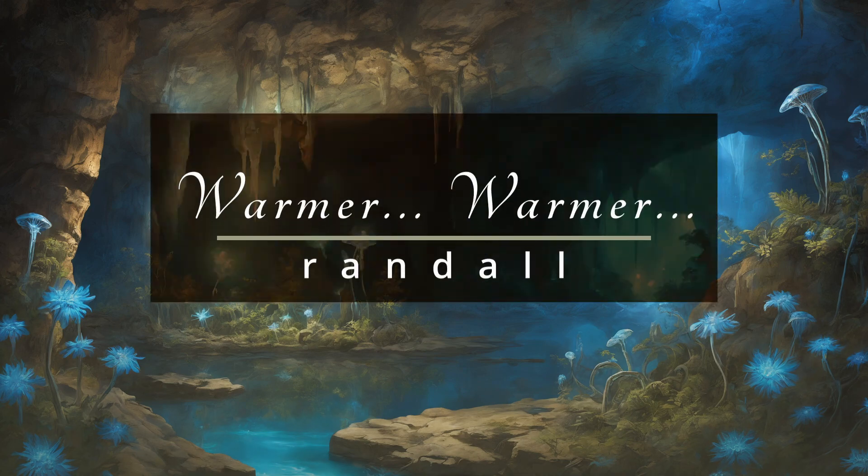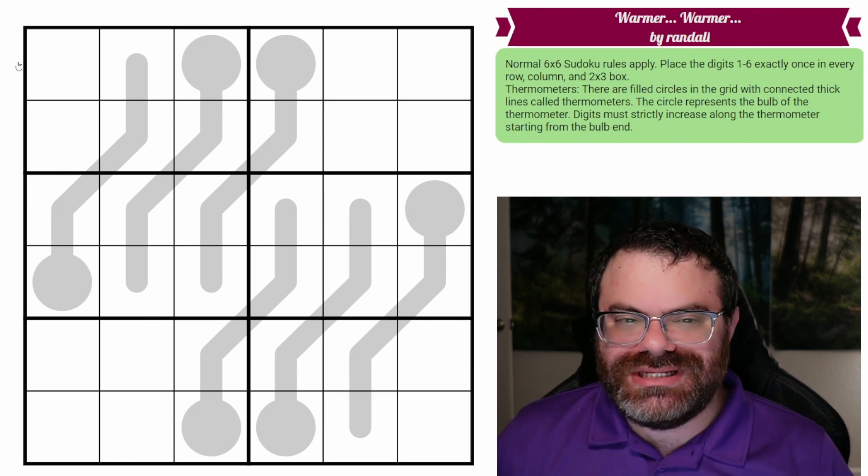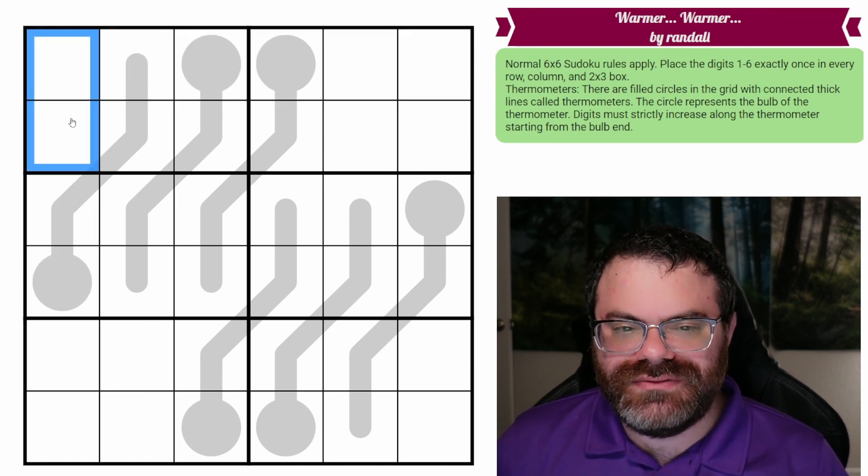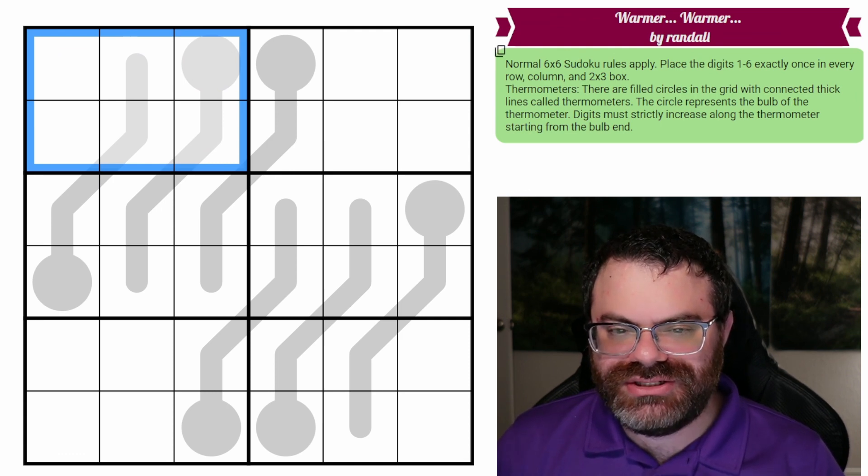Hello, let's continue our Sudoku adventure with Warmer Warmer by Randall. So we have normal six by six Sudoku rules in every row, every column and every two by three box, we are placing the digits one to six exactly once each.